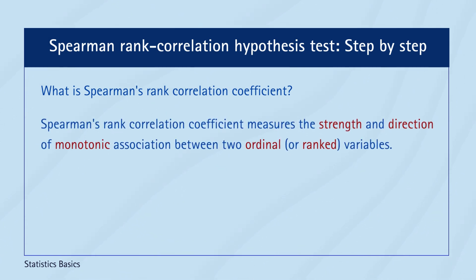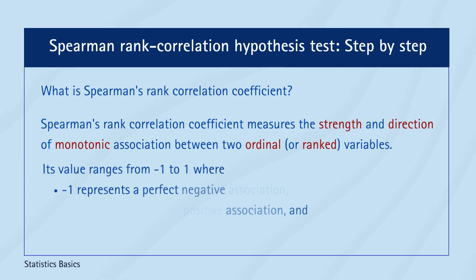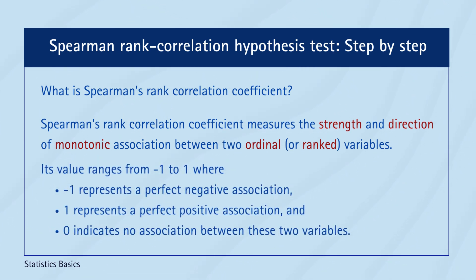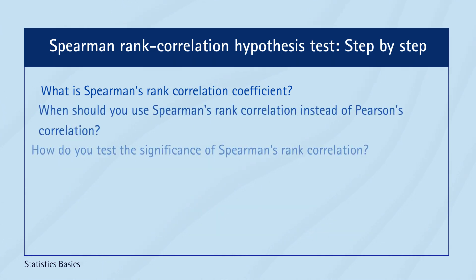Spearman's Rank Correlation Coefficient measures the strength and direction of monotonic association between two ordinal or ranked variables. Its value ranges from minus 1 to 1, where minus 1 represents a perfect negative association, 1 represents a perfect positive association, and 0 indicates no association between the two variables.